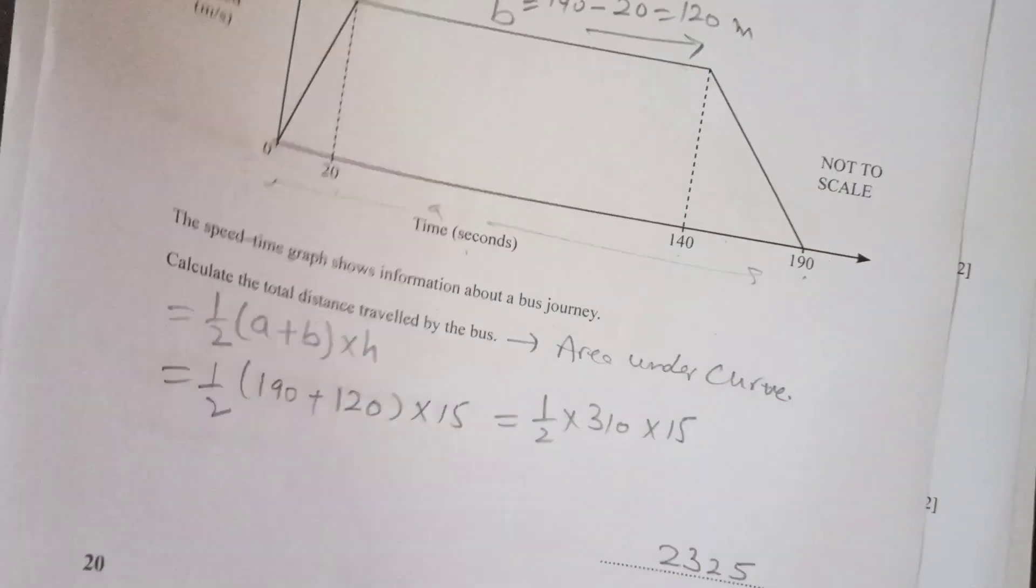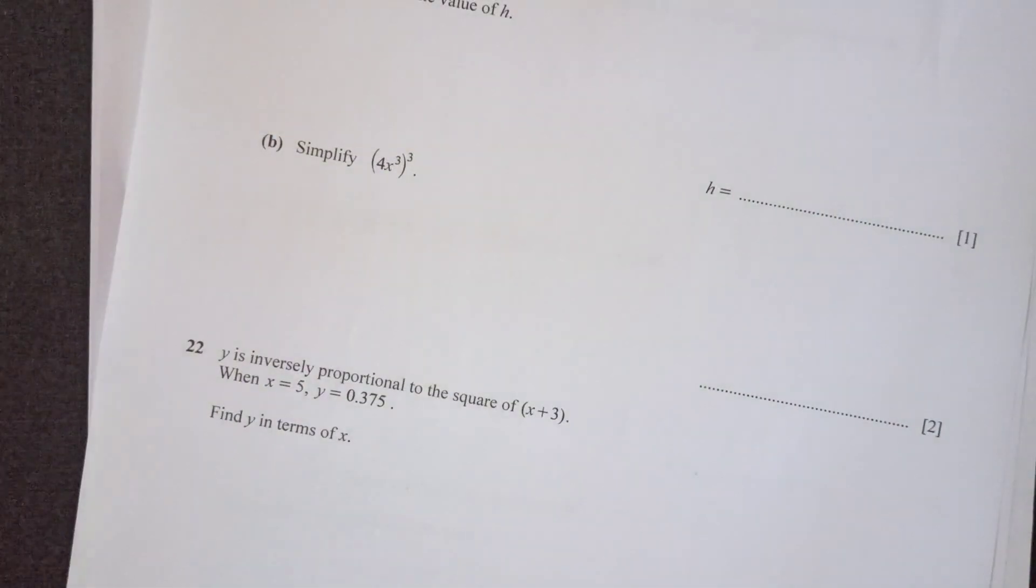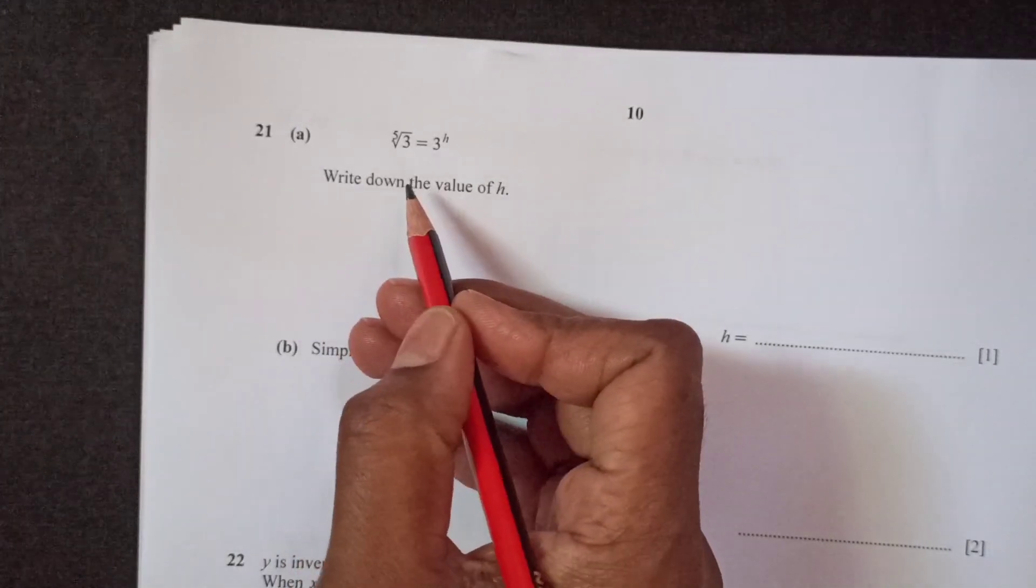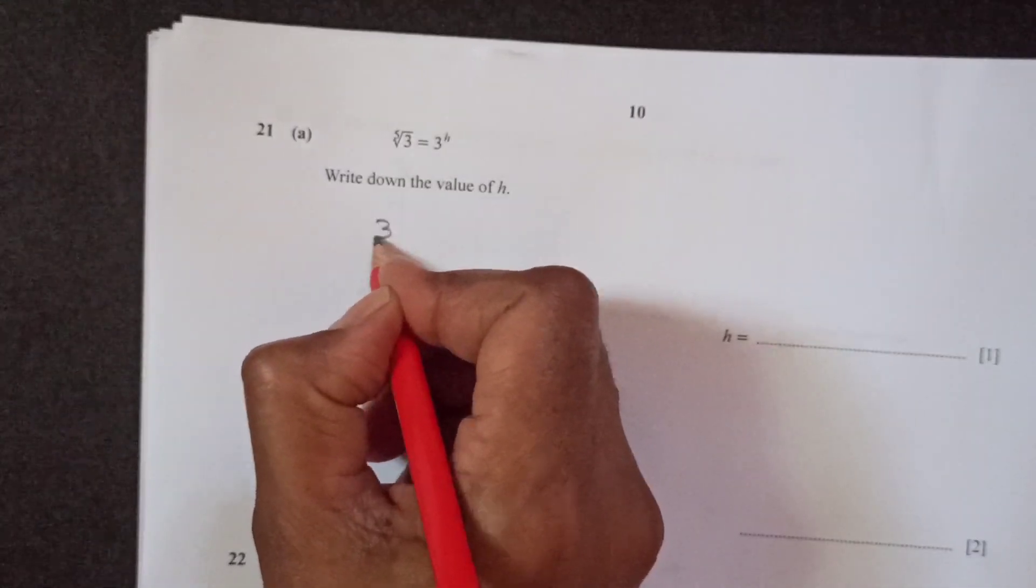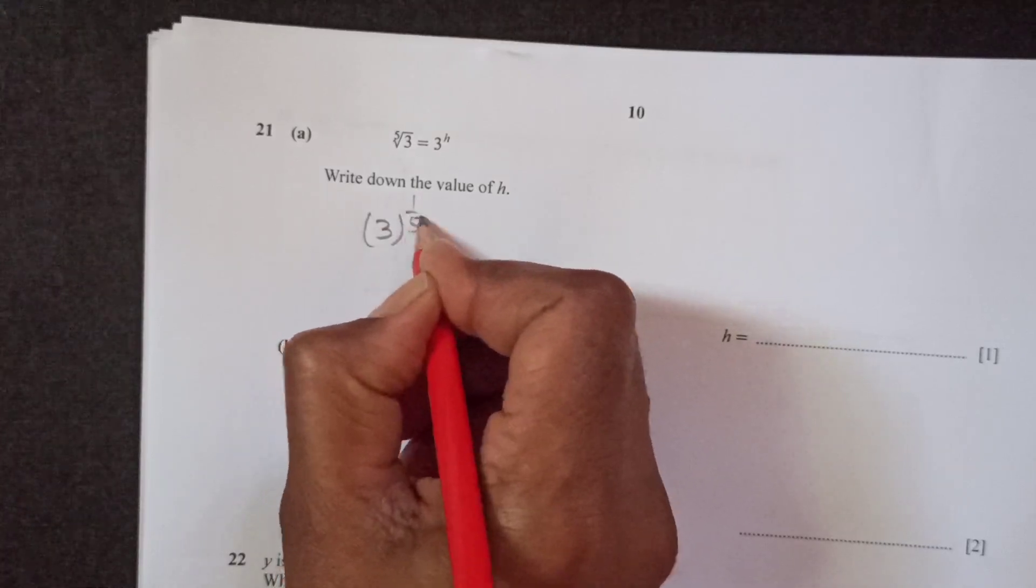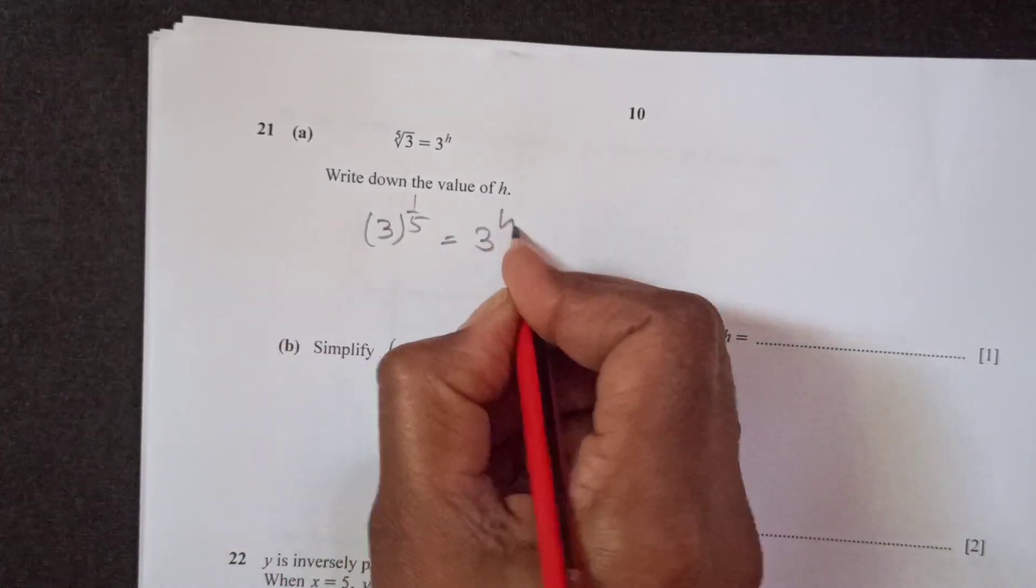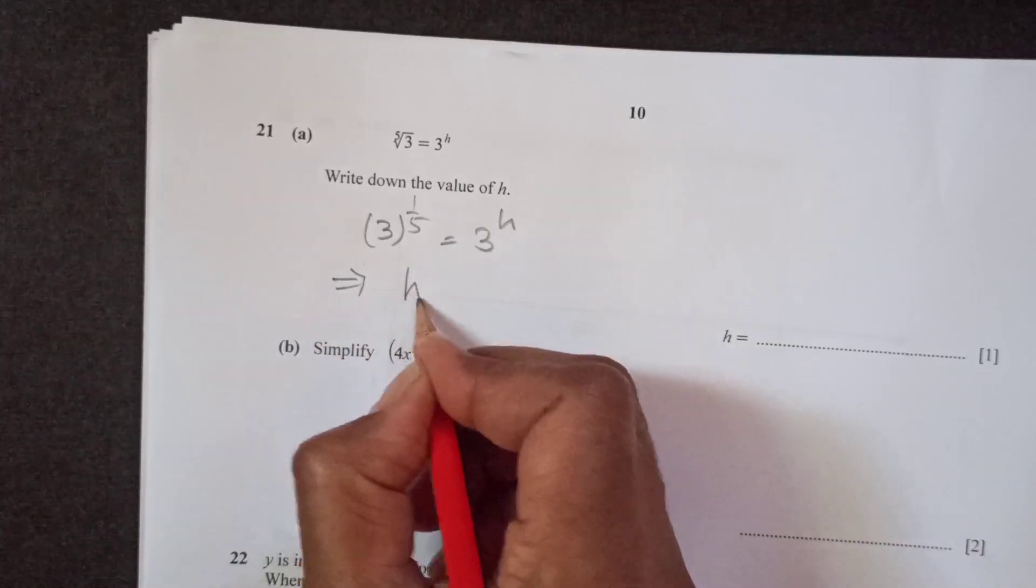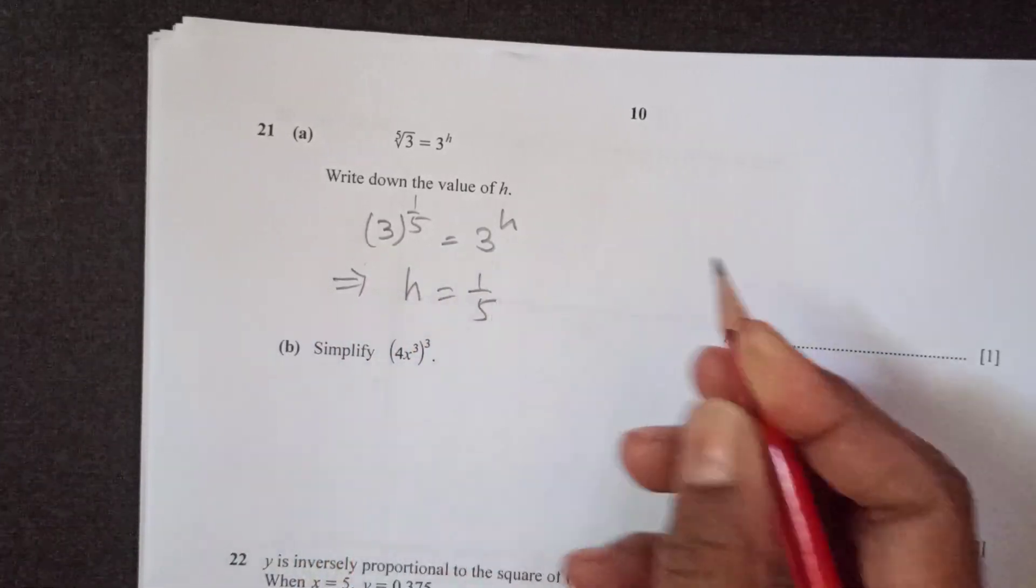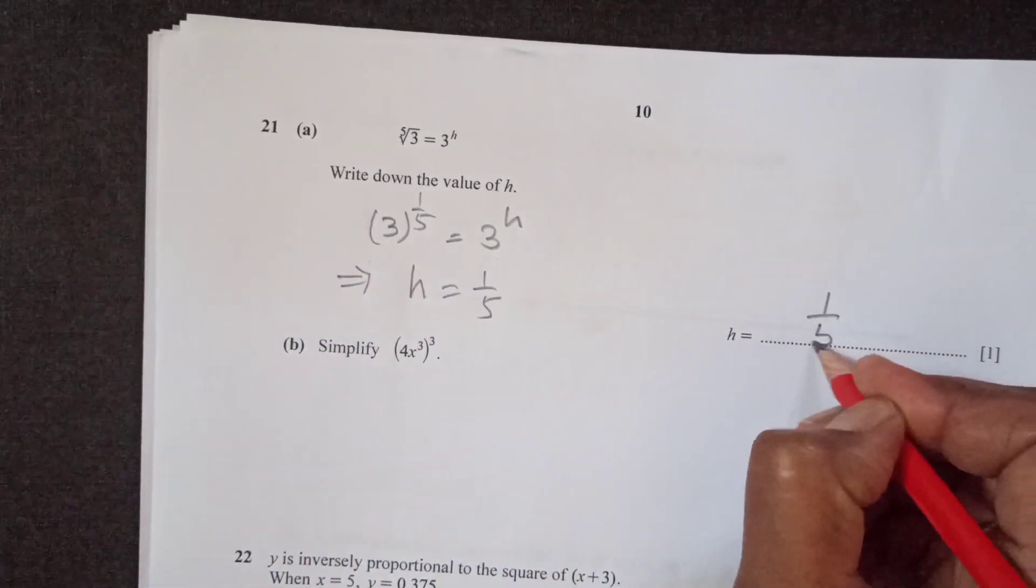Now let's see what is our next question here. The next question we have given that fifth root of 3 equals to 3 power h. So this can be written as 3 power 1 over 5 and this is 3 power h. So now base is same. So exponent is also going to be same, h is equal to 1 over 5. So final answer is 1 over 5.